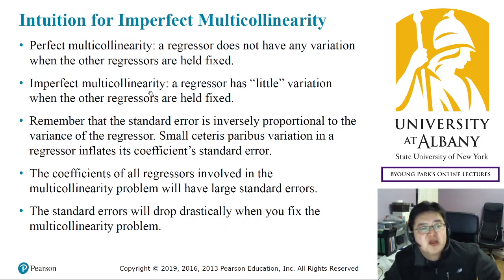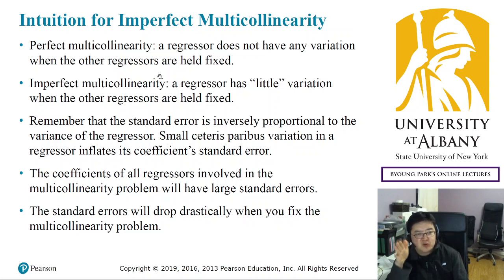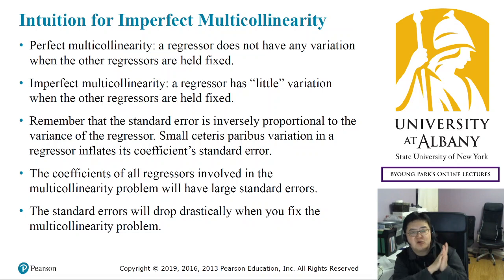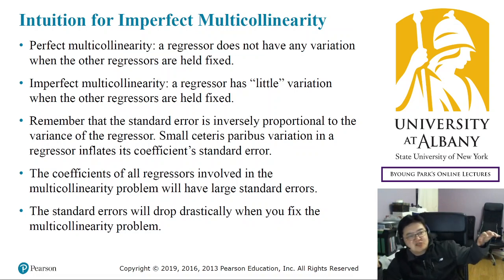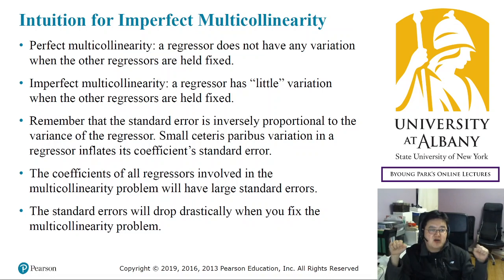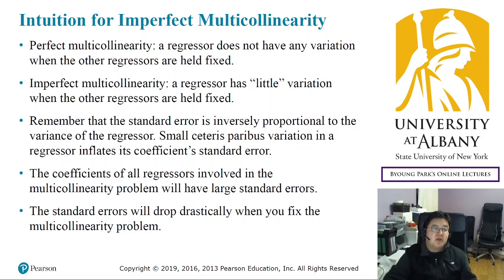So imperfect multicollinearity is more of a computational problem — there is no clear theoretical judgment whether it is multicollinearity or not. The intuition is that multicollinearity can be understood as the lack of ceteris paribus variation. The problem arises when a regressor does not have variation when the other regressors are held fixed. In perfect multicollinearity, there is no ceteris paribus variation at all, but imperfect multicollinearity is the case when you have too little variation.